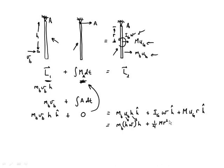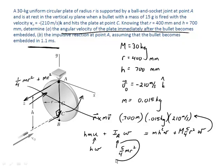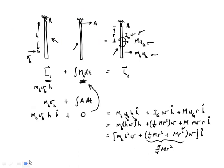So I have one-fourth m r-squared times omega in the positive k-hat direction, plus m times r-omega times r, k-hat. This simplifies to mass of the bullet times H-squared times omega, plus one-fourth m r-squared, plus m r-squared, times omega — all in the k-hat direction. This term is the five-fourths m r-squared that we saw in the previous version. It's the same equation as before, just a slightly different way of looking at things.